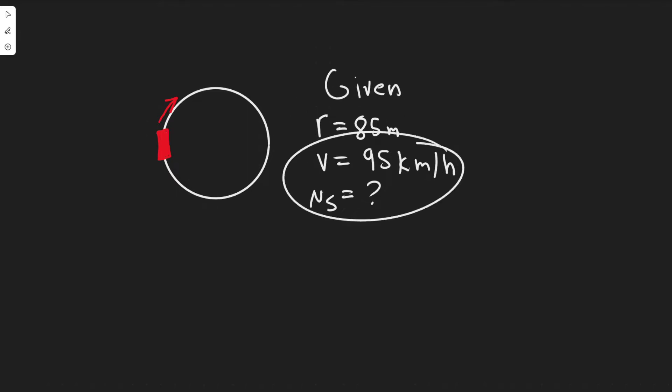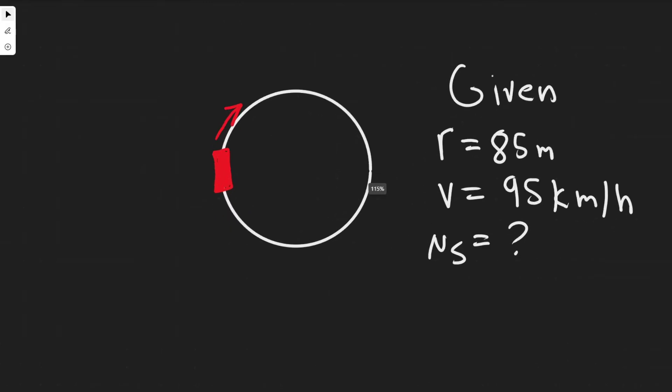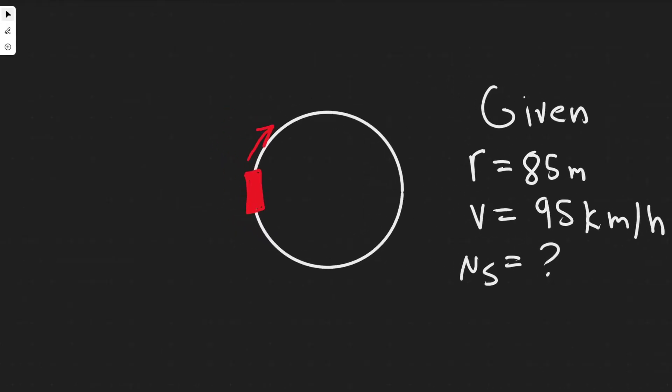The way we solve this is we need to understand what's going on in terms of a free body diagram. We know that the force of friction and the centripetal force—there's going to be a centripetal force going inwards—and the thing that's going to be countering that is the force of friction.